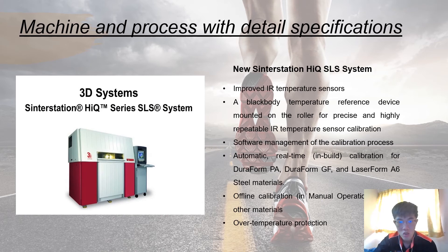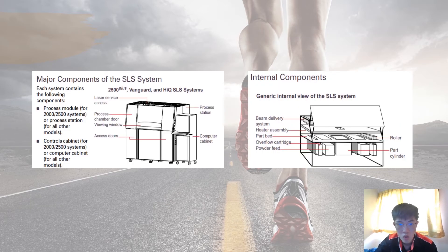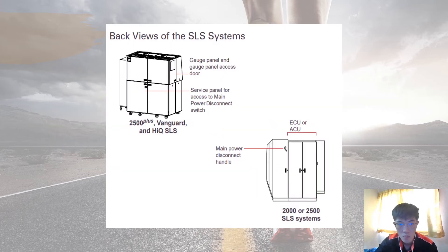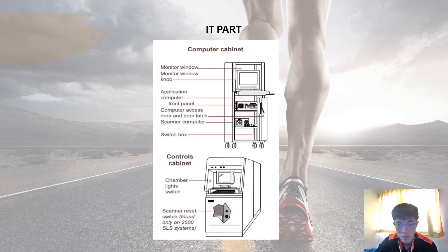This is the machine used to manufacture the AFO. It is called the Sinterstation HiQ SLS system. Here are some of the new features of the Sinterstation HiQ SLS system. These two figures show the major and internal components of the SLS system, including the back wheels. For the IT part, it consists of a computer cabinet and a control cabinet.